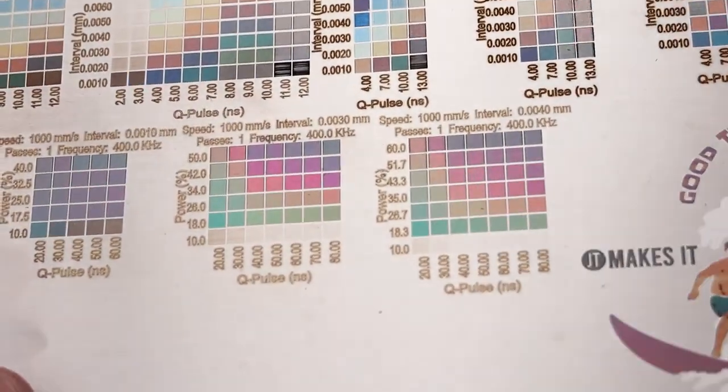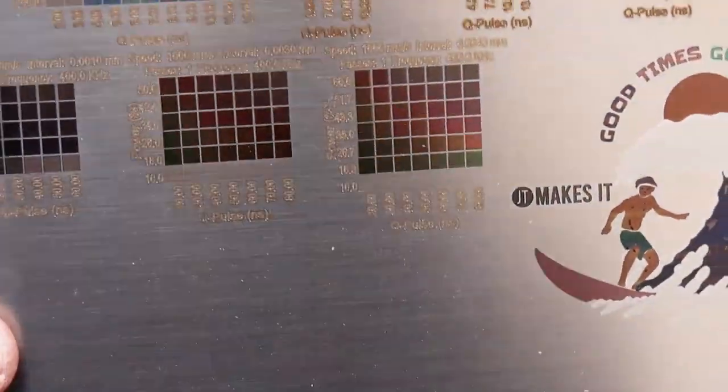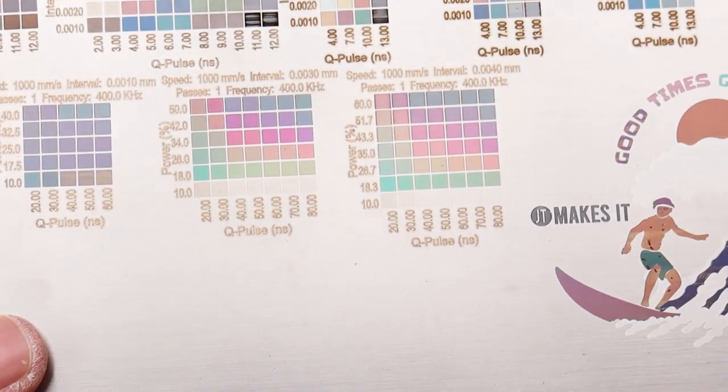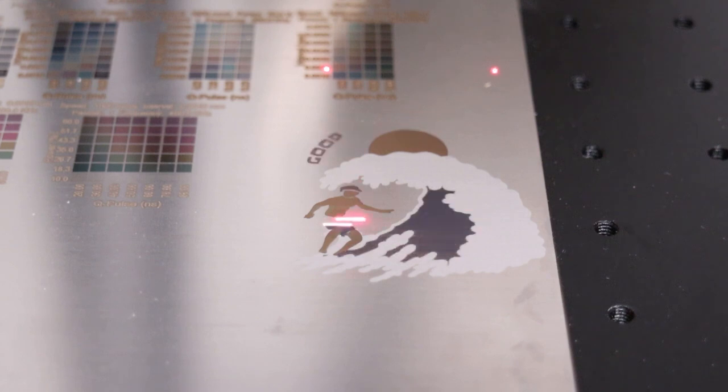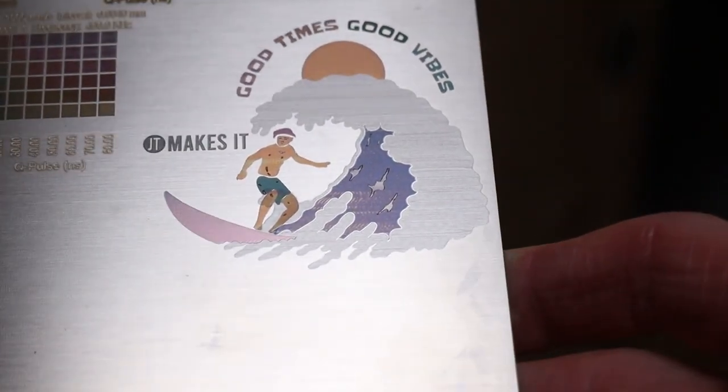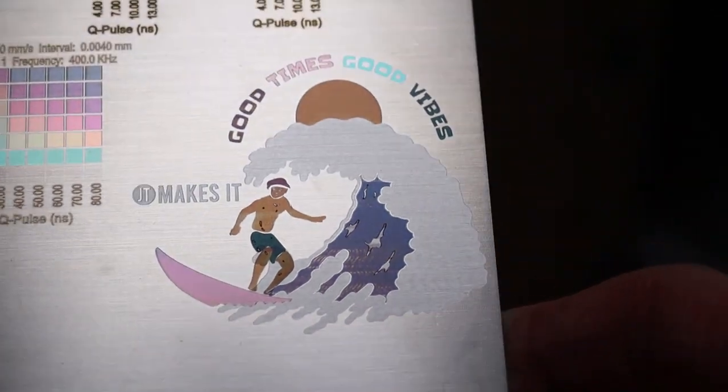Lastly, I tried varying power and Q-pulse, which gave me even more colors. Some colors can be seen only from certain angles, while others are less dependent on the viewing angle. Then I engraved this surfer dude to see if it is possible to repeat these colors. The result came out exactly as it should, and I am very happy with it.